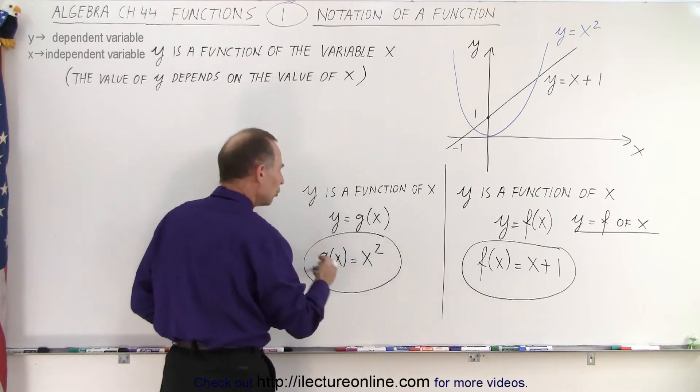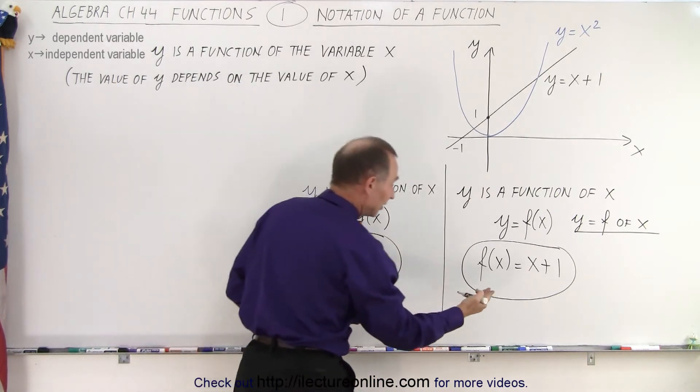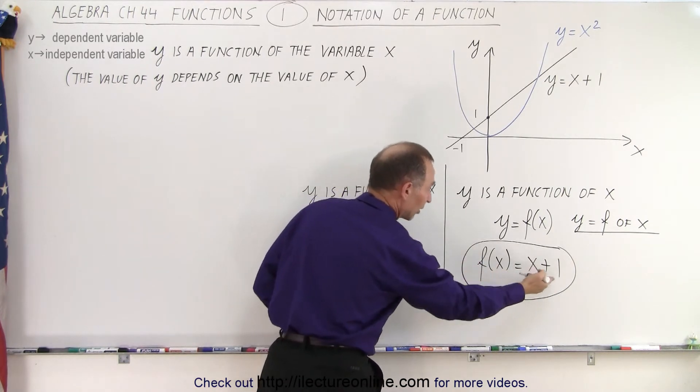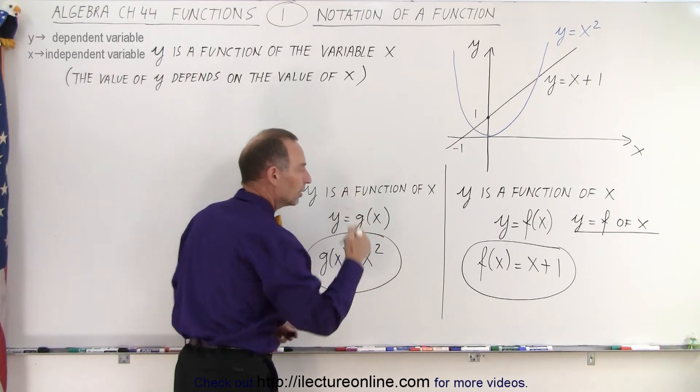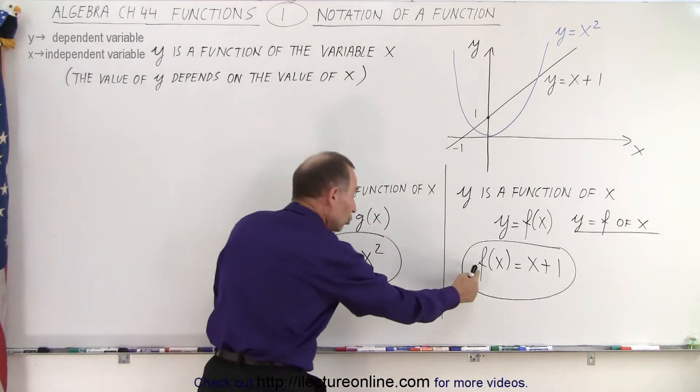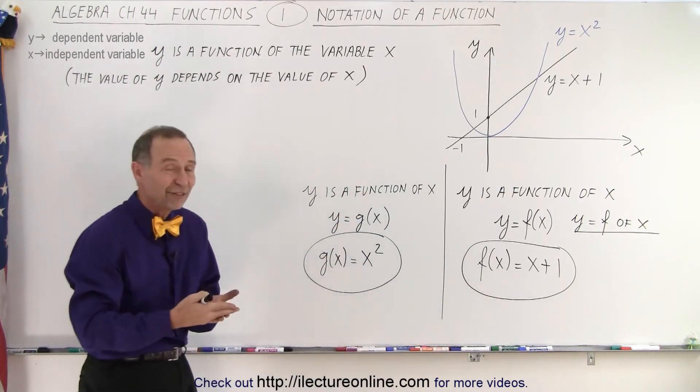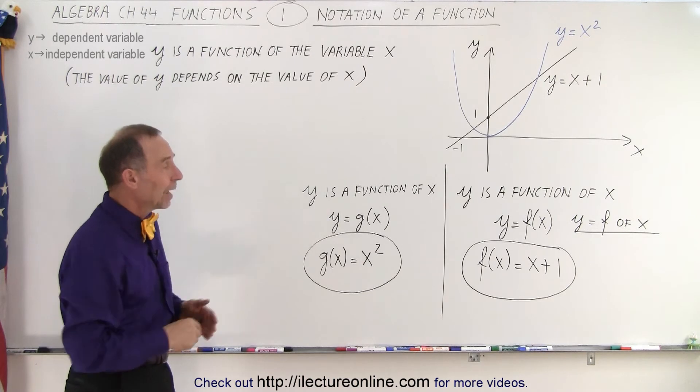So this is how we notate a function. So when we say notation of function, that's exactly what it is. A function of the variable x equals x plus 1. A function of the variable x equals x squared. So that's how it's done. If you have more than one function, we typically use two different letters. We usually start with f, then we go to g, then we go to h if we have to. And that's typically how it's done.